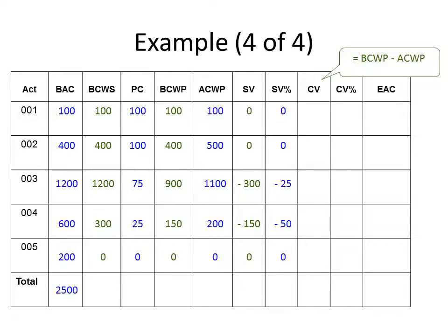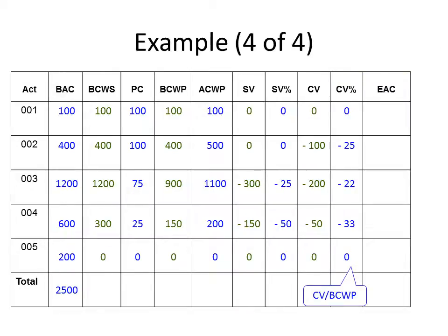Next we calculate cost variance using the formula: budgeted cost of work performed minus actual cost of work performed. For activity two, BCWP was $400,000 but ACWP was $500,000, resulting in a cost variance of minus $100,000. Activity two achieved its time target but was 25% over budget. Activity three is estimated to be 22% over budget, and activity four is 33% over budget.